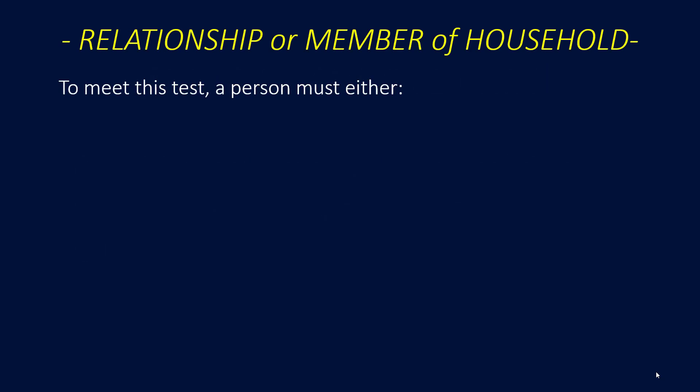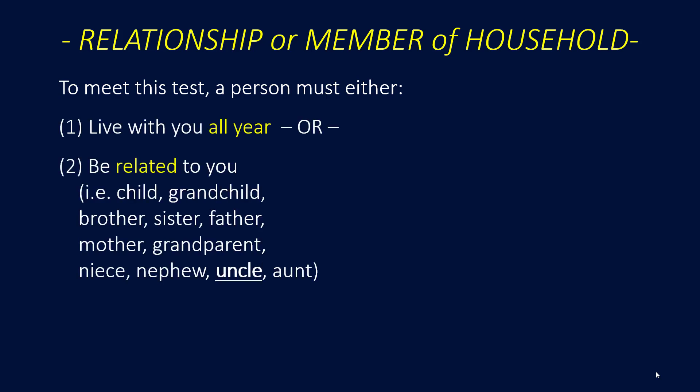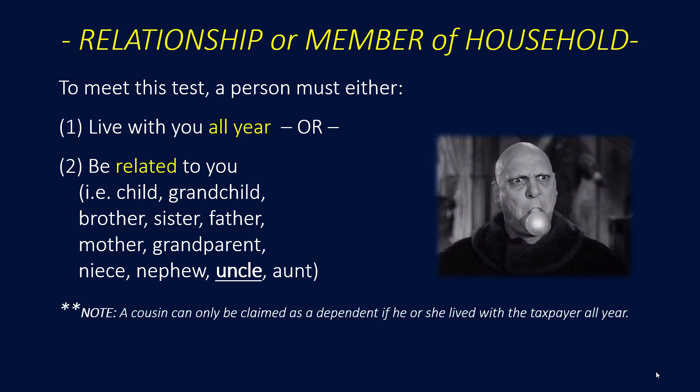The relationship or member of household test: to meet this test, the qualifying relative must either live with you all year or be related to you, such as a child, grandchild, brother, sister, father, mother, grandparent, niece, nephew, uncle, or aunt. Take note: a cousin can only be claimed as a dependent if he or she lived with the taxpayer all year.